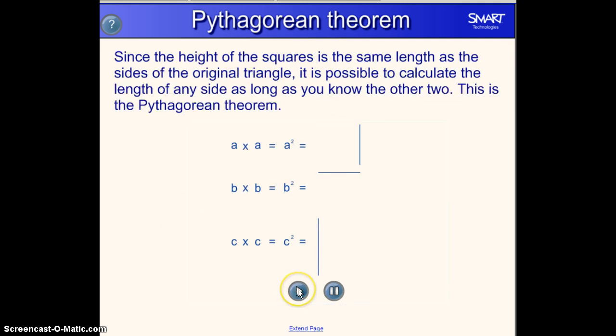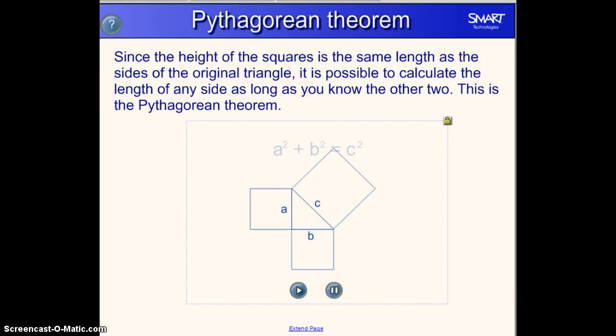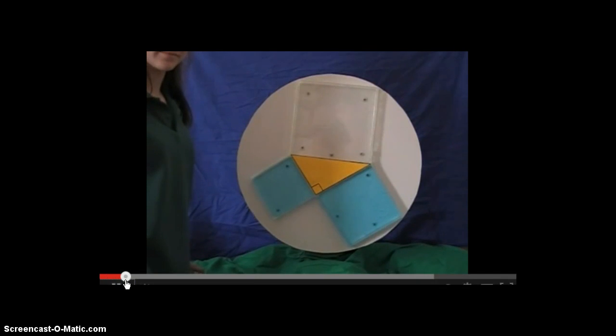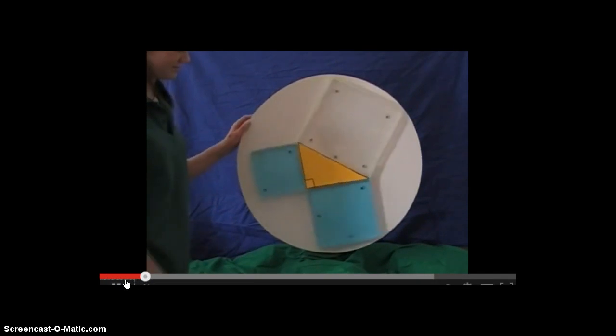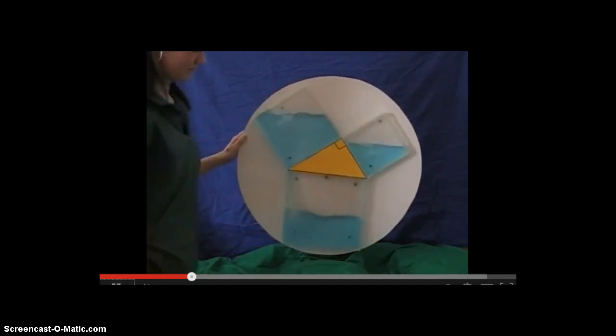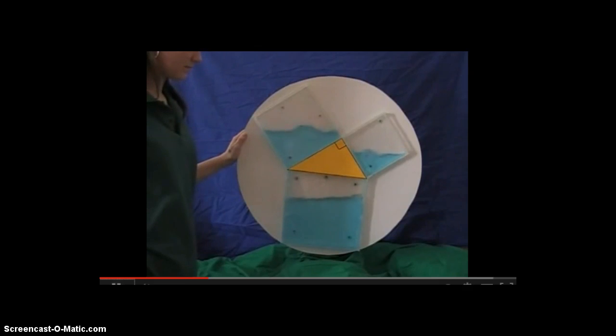So since the height of the squares is the same length as the sides of the original triangle, it's possible to calculate the length of any side as long as you know the other two. This is the Pythagorean Theorem. So we can see that demonstration here with this water example. The volume of the water that was in both the two smaller squares will be equal to the volume that is held in the square off the hypotenuse.